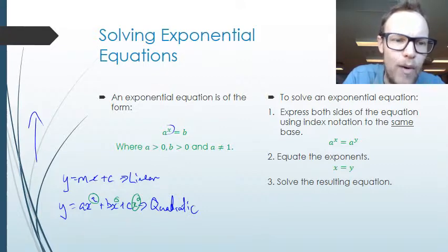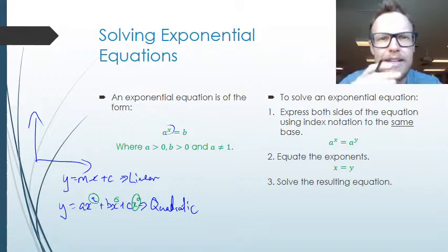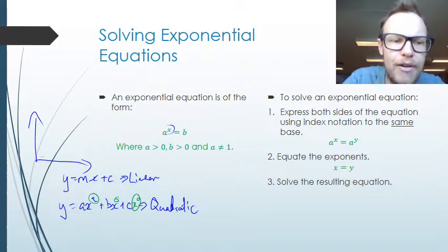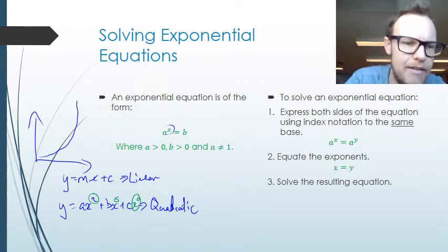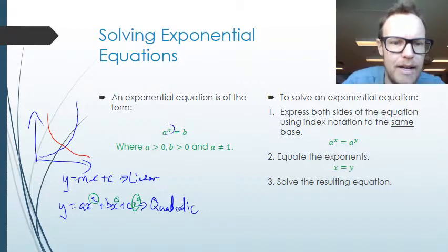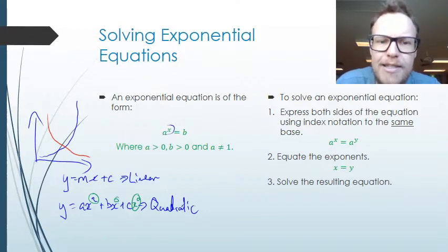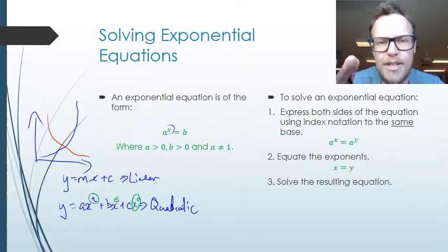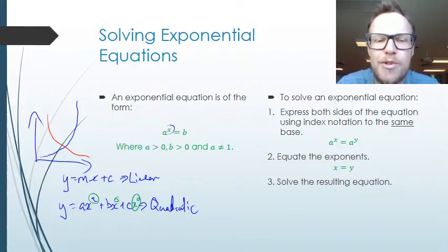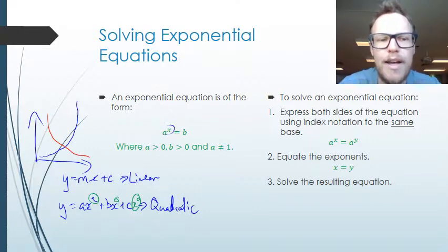If we were to graph an exponential equation, they constantly increase by a certain rate or constantly decrease. So they either have constant growth, like this, or they have constant decay, like this. The reason why a and b need to be greater than 0 is to ensure the value stays in the positive quadrant. We can modify the basic form later to see what happens when we make a negative and shift the graph up or down.